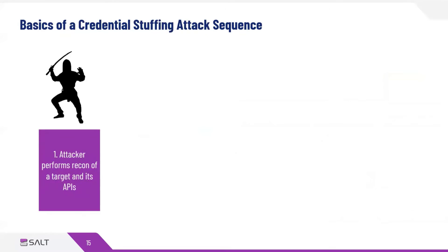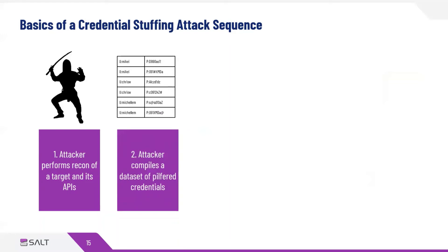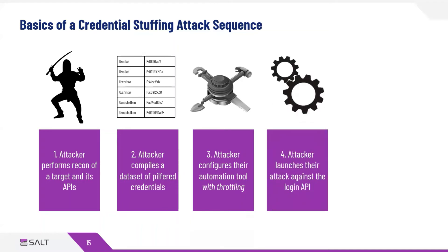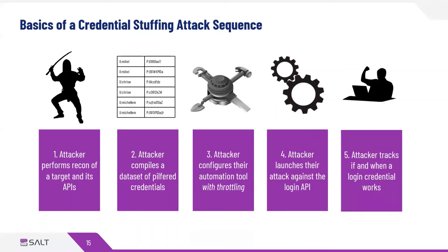With credential stuffing, there is a specific attack sequence. First, the attacker performs reconnaissance of a given target and its APIs — usually a login API — because we're trying to obtain working user credentials to authenticate and access functionality or data. The attacker then compiles a dataset of pilfered credentials. Next, the attacker configures their automation tool with throttling — we'll cover that more deeply in a moment. Then they launch the attack against the login API, tracking successes and failures. They're likely distributing and running multiple requests in parallel to accelerate finding working credentials.